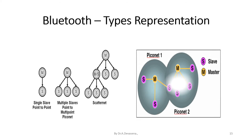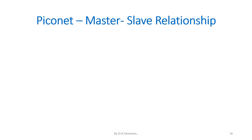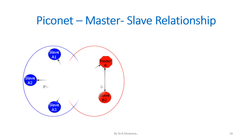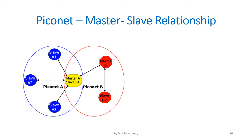Another representation of Bluetooth types shows Piconet 1 and Piconet 2 with master and slave relationships indicated. Consider Piconet A having four devices, one acting as master. That same device acts as a slave in Piconet B, while the device shaded in yellow is acting as a master in Piconet A.